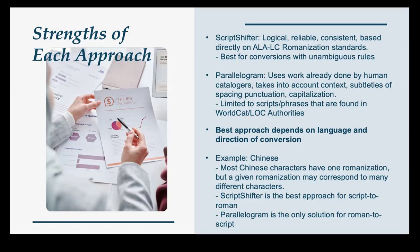The best approach really depends on the language and on the direction of the conversion. Chinese characters mostly have one romanization, or if they have more than one, it's easy to deduce from context. But a given romanization may correspond to many different characters. So if you're converting characters to romanization in Chinese, ScriptShifter is really the best approach because it has a built-in Chinese dictionary. On the other hand, if you're converting romanization back to Chinese script, Parallelogram is really the only approach, because there's no way with just a dictionary that you can know what character a certain romanization corresponds to. And so we see how these two approaches really complement each other.